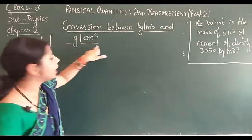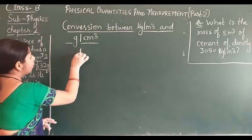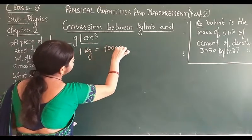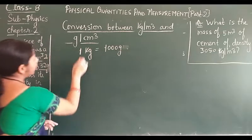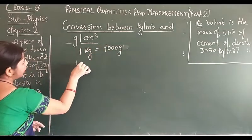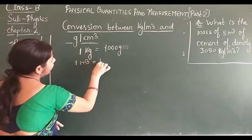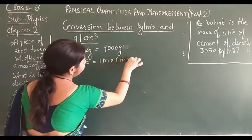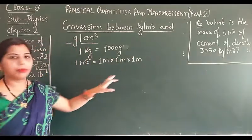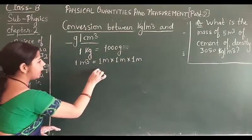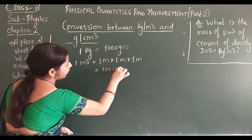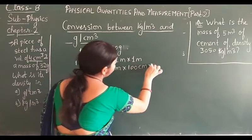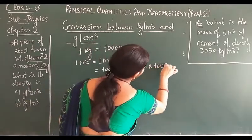First, kg is converted into gram. As you all know, 1 kg is equal to 1000 grams. Now, 1 cubic meter is equal to 1 m × 1 m × 1 m. Converting to centimeters, that is 100 cm × 100 cm × 100 cm.